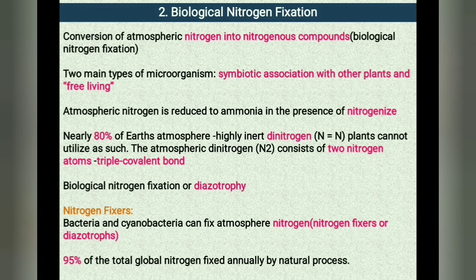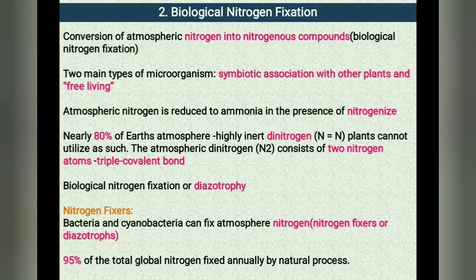Among earth's organisms, only some prokaryotes like bacteria and cyanobacteria can fix the atmospheric nitrogen. They are called nitrogen fixers or diazotropes. They fix about 95% of the total global nitrogen fixed annually by natural processes.